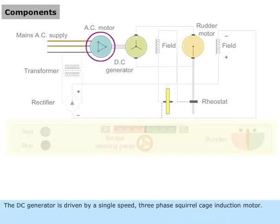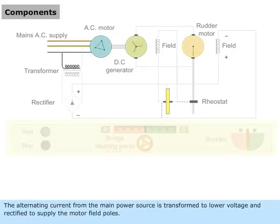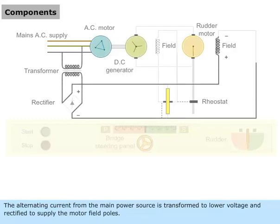The DC generator is driven by a single-speed, three-phase squirrel cage induction motor. The alternating current from the main power source is transformed to lower voltage and rectified to supply the motor field poles.